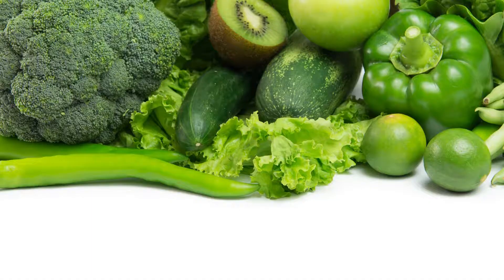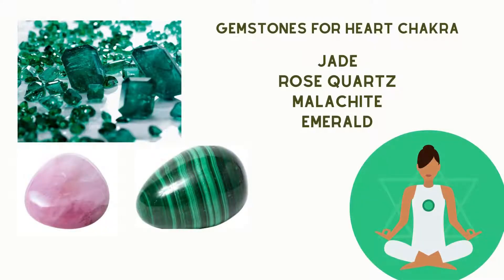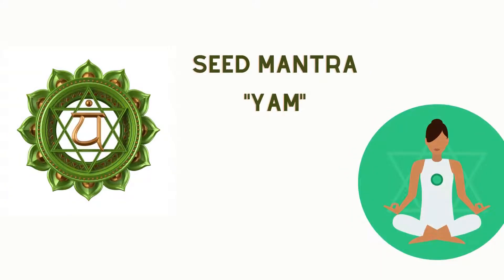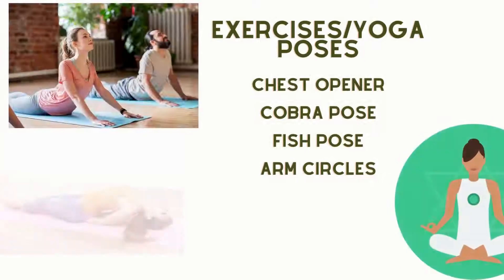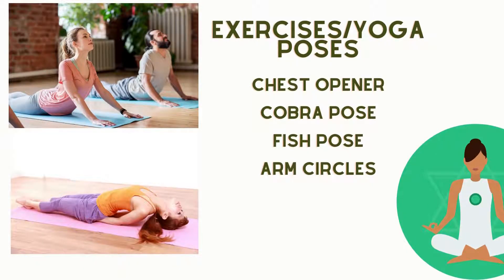We can also eat vegetables that are green in color to open this chakra. Some gemstones to meditate with include malachite, emerald, jade and rose quartz. The seed mantra associated with this chakra is YAM, believed to contain the essence of the chakra — chanting YAM or meditating on the seed mantra can help open it. Exercises to stimulate the heart chakra include the cobra pose, the fish pose and arm circles.